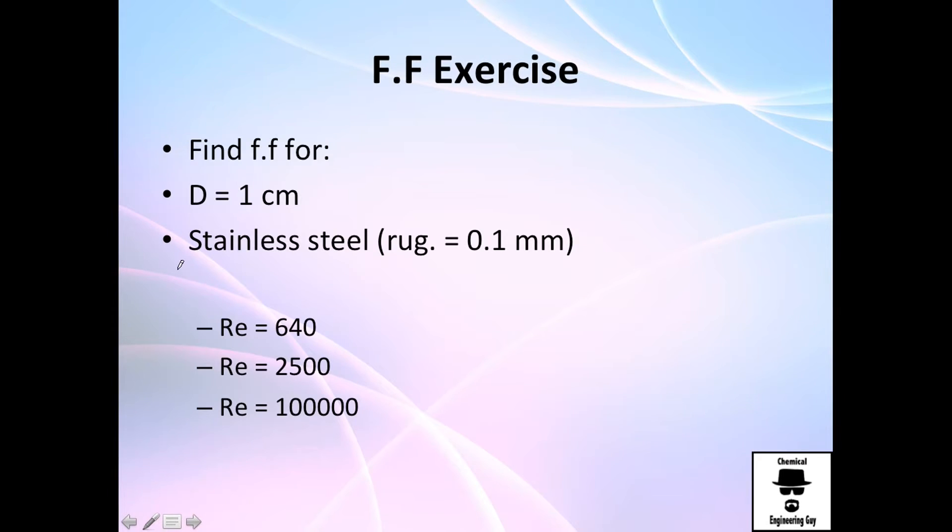Let me show you an exercise. Now I'm going to tell you what type of problem you will encounter. They will tell you find the friction factor for a pipe which has a diameter of one centimeter. We are using stainless steel. The relative roughness is 0.1 millimeter. And they tell you to calculate the friction factor for these Reynolds values.